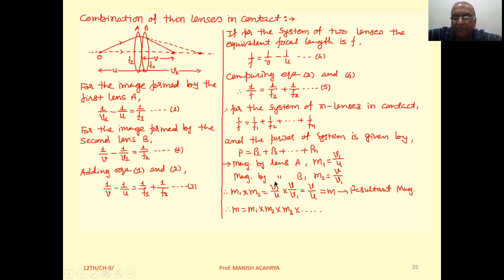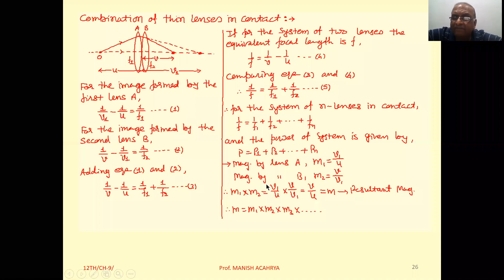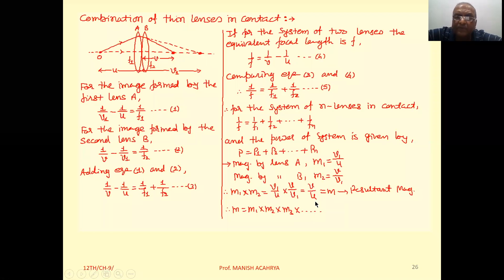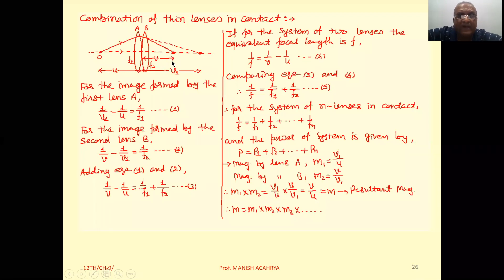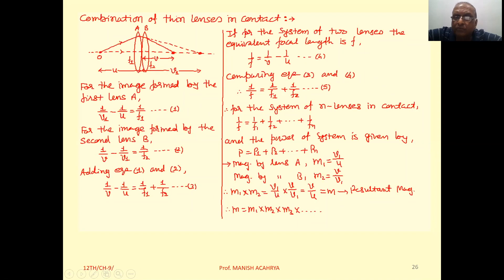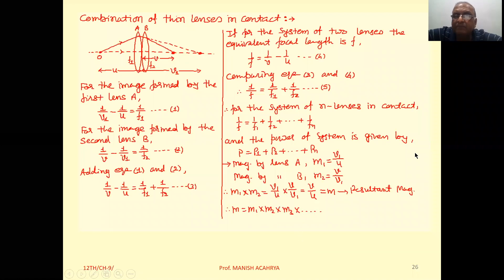For the entire system, we also consider the magnification. The magnification by lens A is M1 = v1/u, and by lens B is M2 = v/v1, since v1 is the object distance for the second lens. So the resultant magnification is v/u, which implies the total magnification of the lens system is M = M1 × M2 × M3 × ... × Mn.